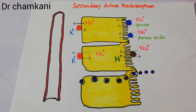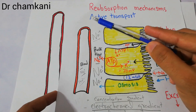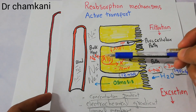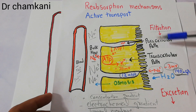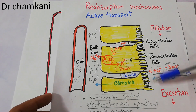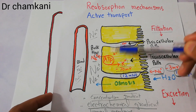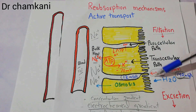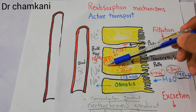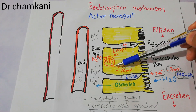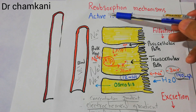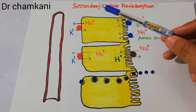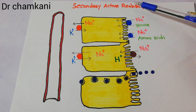In our last lecture we discussed that in primary active transport, there is direct use of energy by breaking down ATPs, and absorption of substances occurs from the tubular lumen into the cells of the proximal tubule and then into the blood. The example used was sodium, where energy is generated by the sodium-potassium ATPase. Another active transport is the secondary active transport, which is secondary active reabsorption.